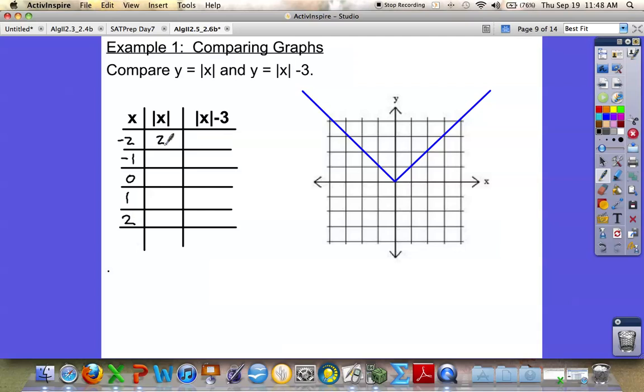Well, the absolute value of negative 2 is just 2. The absolute value of negative 1 is 1. The absolute value of 0 is 0. The absolute value of 1 is 1. And the absolute value of 2 is 2.